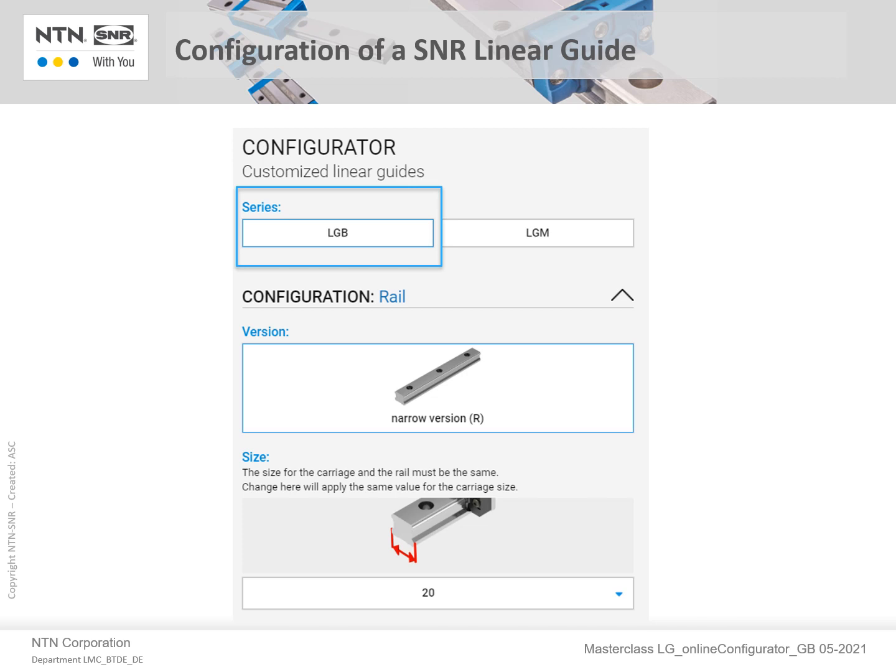First, the rail version. We will select the narrow version rail, which is suitable for standard Linear Guide carriages. Then the size is selected, and in this example, we have changed the selection from size 20 to size 25.